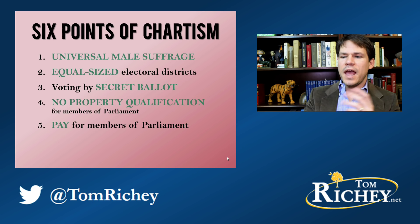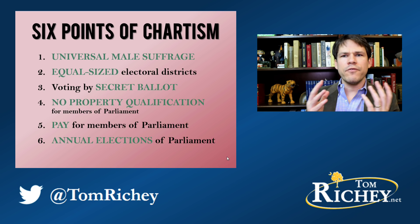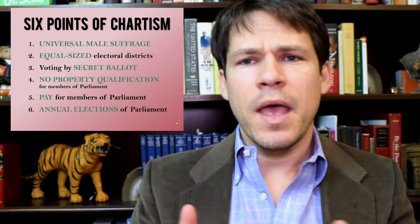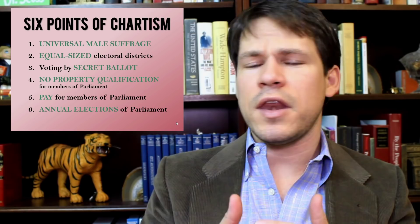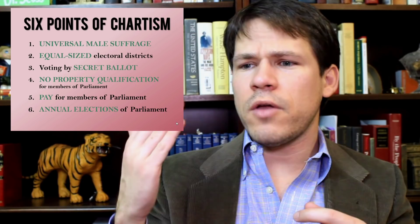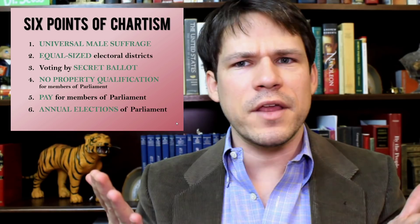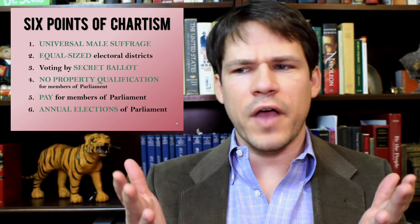And sixth, annual elections of Parliament, to make Parliament more accountable to the people. Really, what they're wanting is direct democracy. In the United States and in the UK today, all of this stuff is pretty much a given — it's not really radical. In America in the 1830s, this was already the case: universal male suffrage, pay for members of Congress, equal-sized districts. So what the Chartists want is democratic reform — they want more democracy.